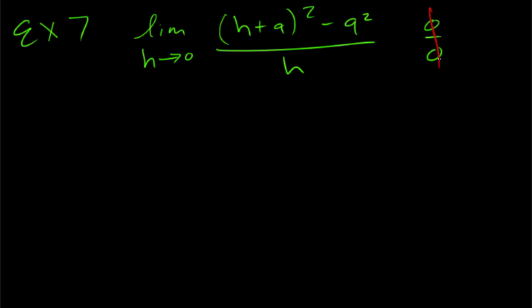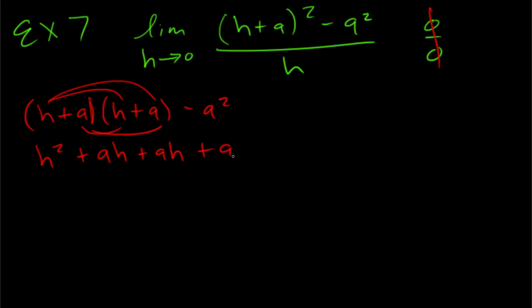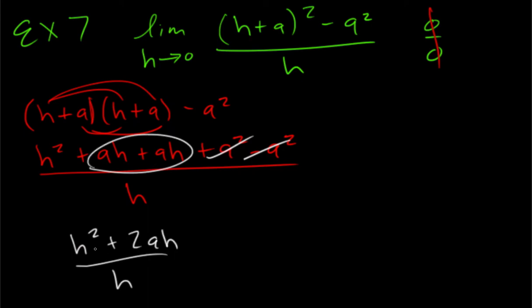And so what we're going to do, we're going to expand the top. So we're going to think of it like not being squared, but something times itself. So we get h squared plus a h plus a h plus a squared minus a squared, and that's all still over h. These cancel because they're opposite, so we have that, and then these combine. This has an h in it. This has an h in it. So we can cancel.